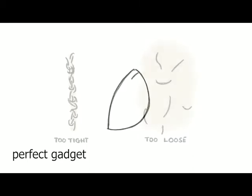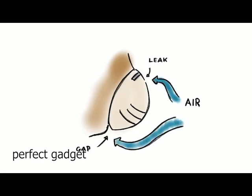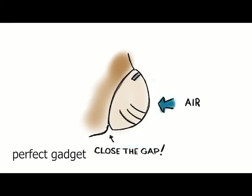To make matters worse, because airflow follows the path of least resistance, the smallest hole or gap in a respirator or face mask can lead to it losing most of its effectiveness. This is why it's so important to have a good seal between a respirator or face mask and your face. It's also why wearing one if you have facial hair is not that effective, as it's impossible to get a good seal.